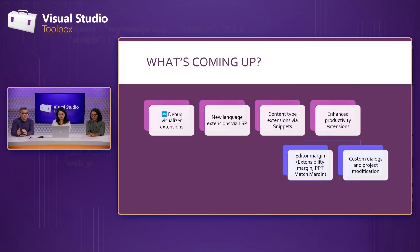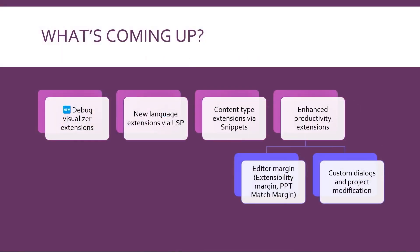In the immediate future, one area we are adding exclusively for Visual Studio is debug visualizers. You will be able to write Visual Studio extensibility extensions that provide debug visualizers to Visual Studio using the remote UX you've seen before. We're also going to be enabling LSP servers, so your extension will be able to provide an LSP server to Visual Studio to add new language support. And we're going to be adding content type extensions and enabling code snippets as the first feature.